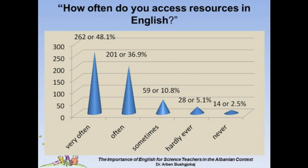To the question of how often subjects access resources in English, the responses were as follows: 252 subjects, or 48.1%, marked very often; 199 subjects, or 36.9%, marked often; 58 subjects, or 10.8%, wrote sometimes; 21 subjects, or 5.1%, ticked hardly ever; and 14 subjects, or 2.5%, chose never. An overwhelming majority responded that they use English to access resources between often and very often, showing how important it is as a language that provides people with the possibilities to access and benefit from resources for their education, jobs, and performance in general.